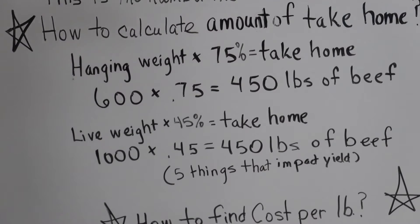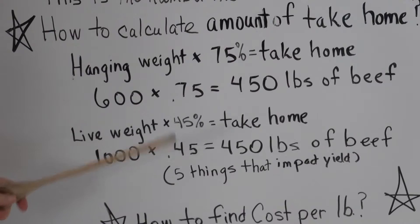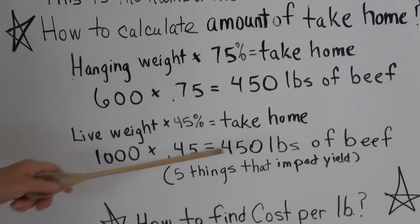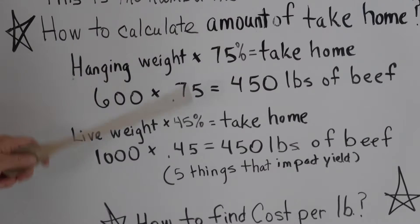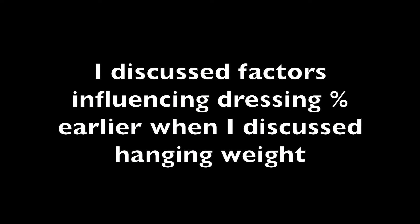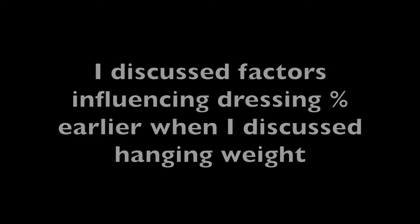There's also another way to calculate the take-home amount: take the live weight of 1,000 pounds and multiply it times 0.45 (45%), and that will usually give you a close estimate. The things that will impact the take-home amount of beef include whether you choose bone-in or boneless cuts, how you get your fat trimmed, and how long you have the carcass aged — because the longer it's aged, the more shrinkage you'll get.